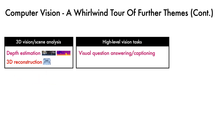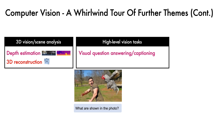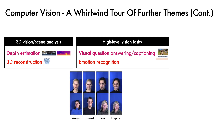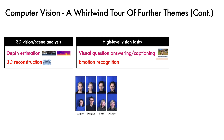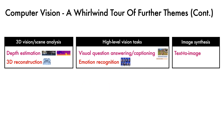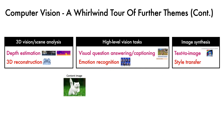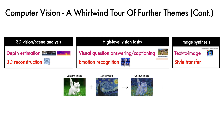We have high-level vision tasks like open-ended visual question answering, where we are given an image and a question like 'what is shown in the photo?' and our task is to provide an answer. Then there are tasks like emotion recognition, where we aim to estimate the emotional state of an individual. One topic of growing popularity is image synthesis, particularly text-to-image generation, where we take in a description like 'an oil pastel drawing of an annoyed cat in a spaceship' and try to produce an appropriate image. There are also topics like style transfer, where we aim to combine a source image with a given style to create a novel result.